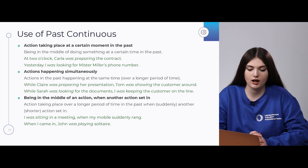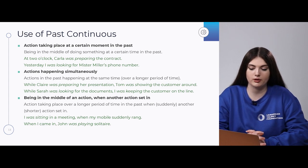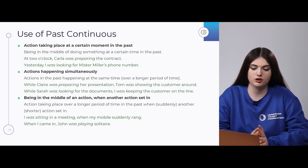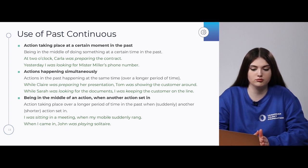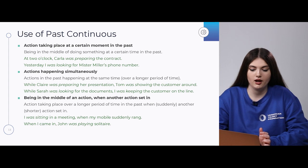The last situation for past continuous is when an action was taking place over a long period of time and then suddenly a shorter action cut in. For example: 'I was sitting in a meeting when my mobile suddenly rang.' Sitting is a long action — past continuous. The mobile ringing is a shorter action — past simple. Another example: 'When I came in, John was playing solitaire' — past continuous for the long action, past simple for the interrupting event.